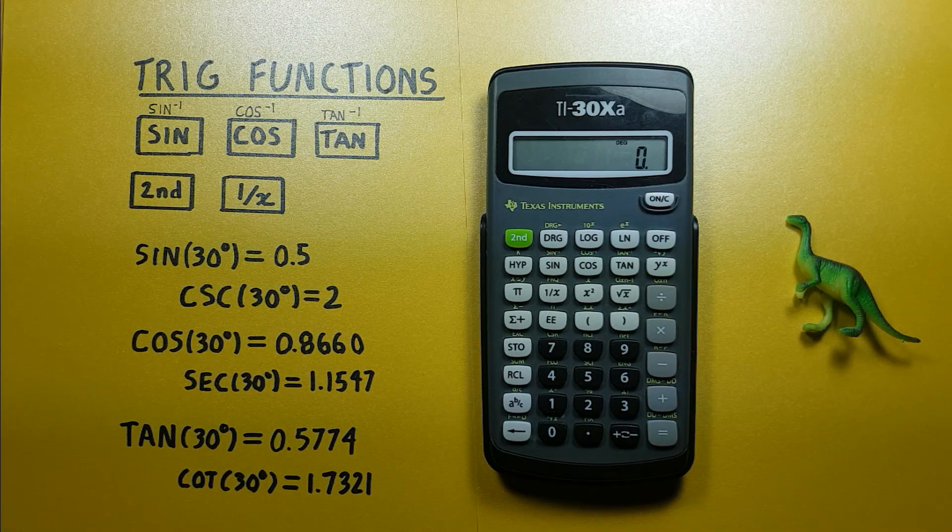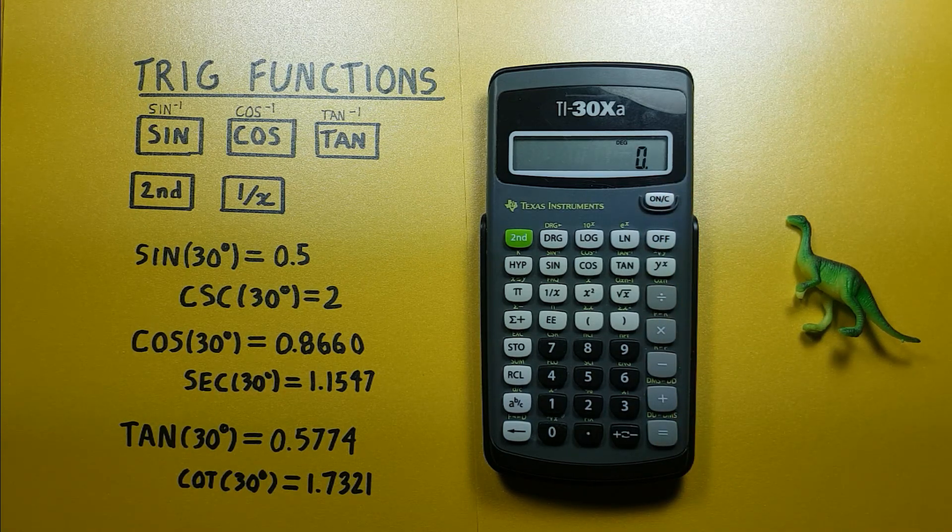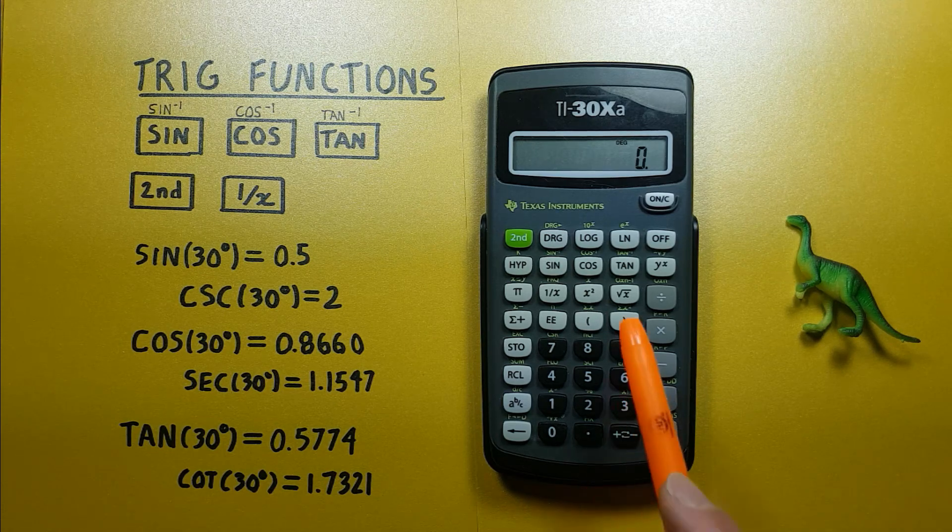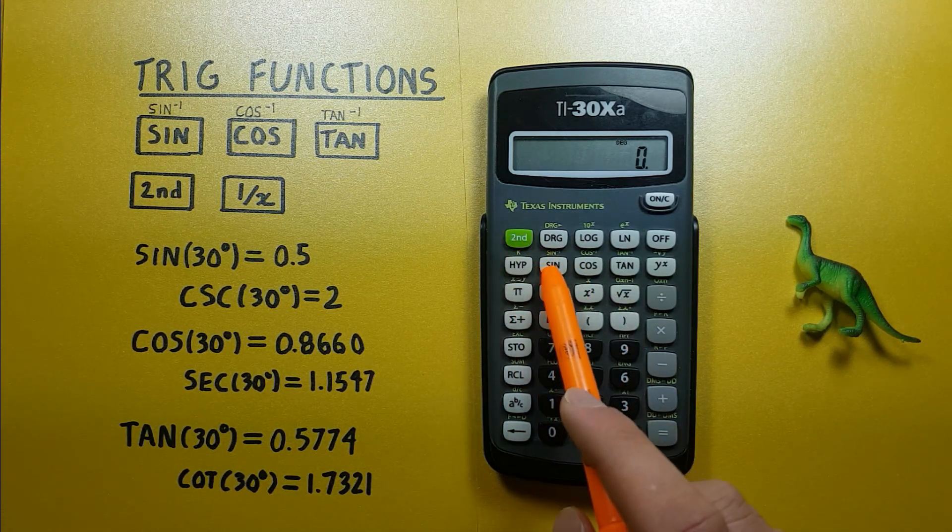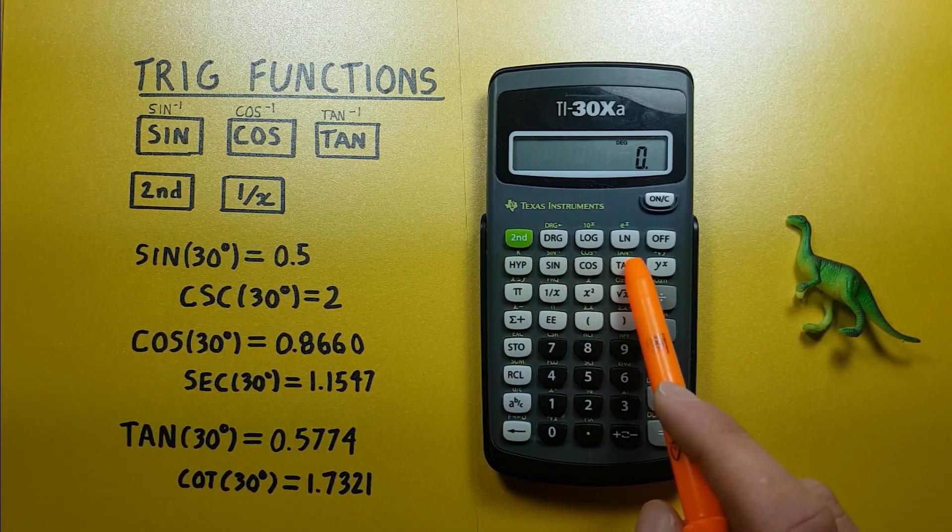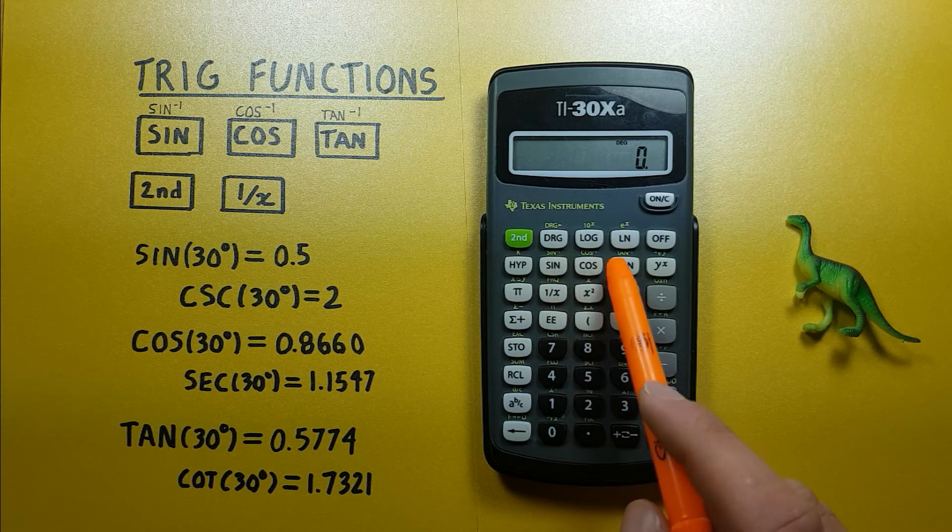We can also do arcsin, arccos, and arctangent on this calculator, and those are actually functions built in. They're the second function of the sine, cos, and tan key. That's sine minus 1, cos minus 1, tan minus 1.